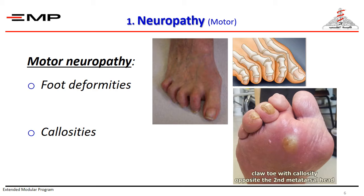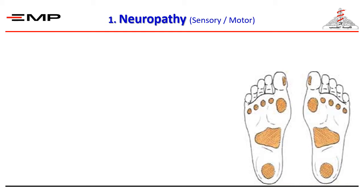Diabetics have motor neuropathy as well. With imbalanced actions of the small muscles of the foot, distortion of the morphology and the weight-bearing characteristics of the foot occurs. This will contribute to the development of characteristic foot deformities in diabetics and the development of what we call hot spots where callosities can form. The combined effect of sensory and motor neuropathy will make the diabetic patient unable to sense pain and will block the natural reflexes that would prevent injury.